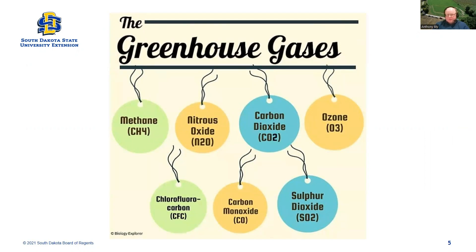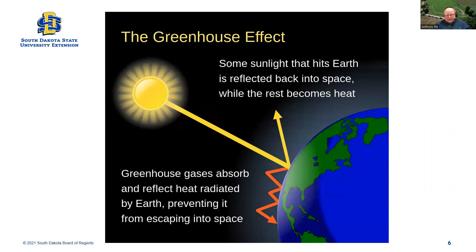There are several greenhouse gases: carbon dioxide, methane — which you hear about if you're in the livestock industry — nitrous oxide if you're a nitrogen user, ozone, chlorofluorocarbons (CFCs) from spray cans, carbon monoxide, and sulfur dioxide. Many different greenhouse gases help trap light in our atmosphere. The greenhouse effect is easy to understand — the sun's energy comes to the planet, light is reflected back, and astronauts on the moon can see the Earth in visible light waves.